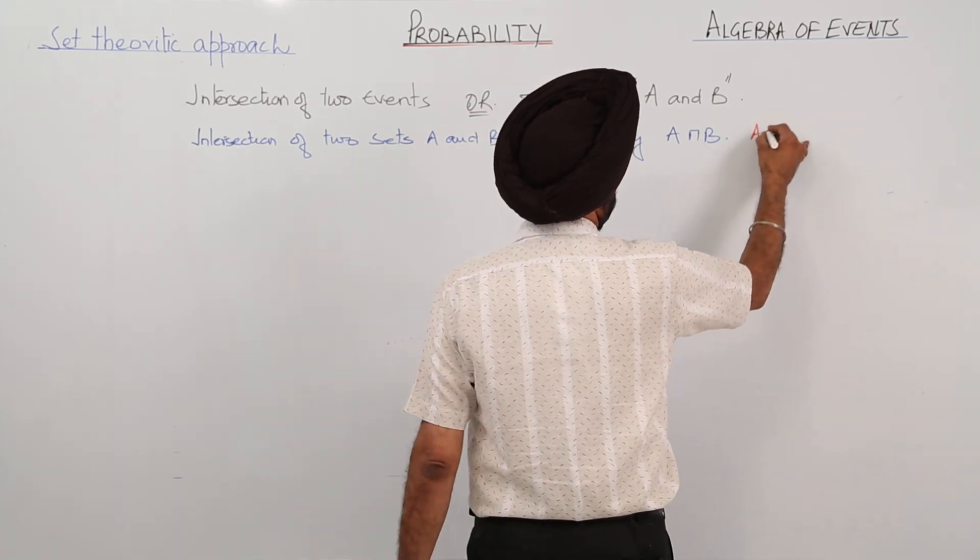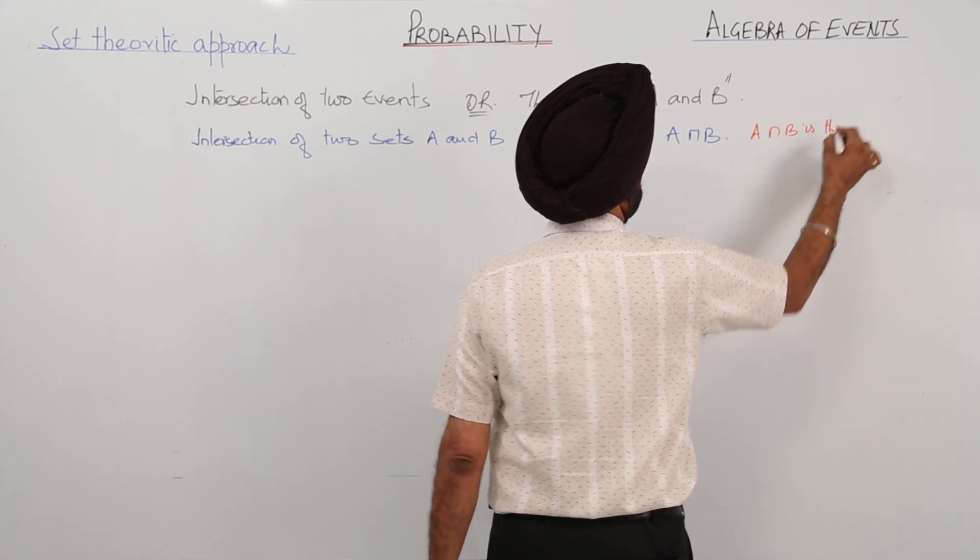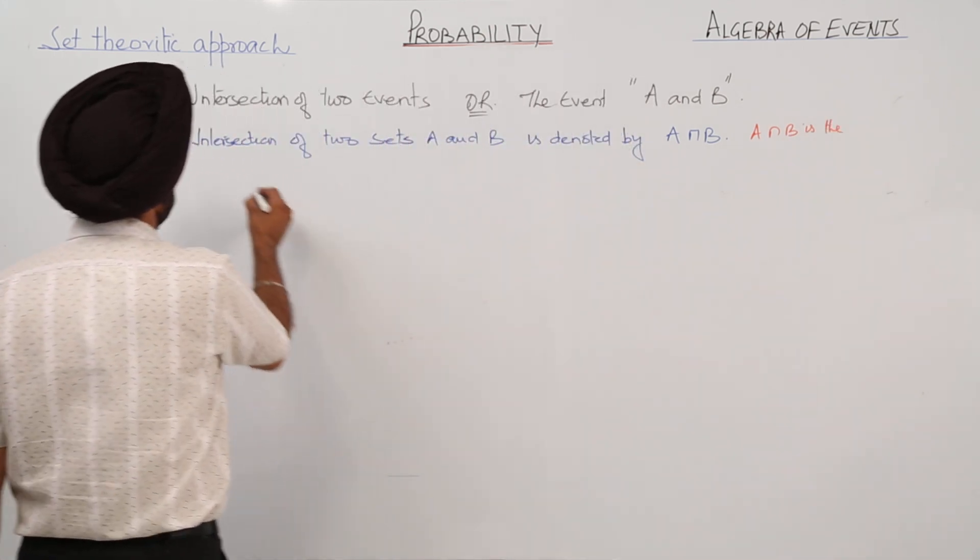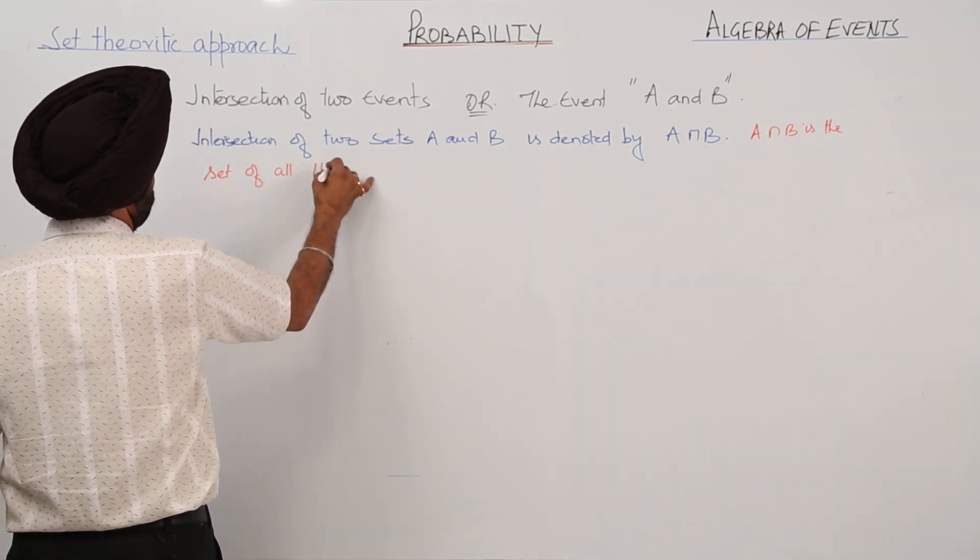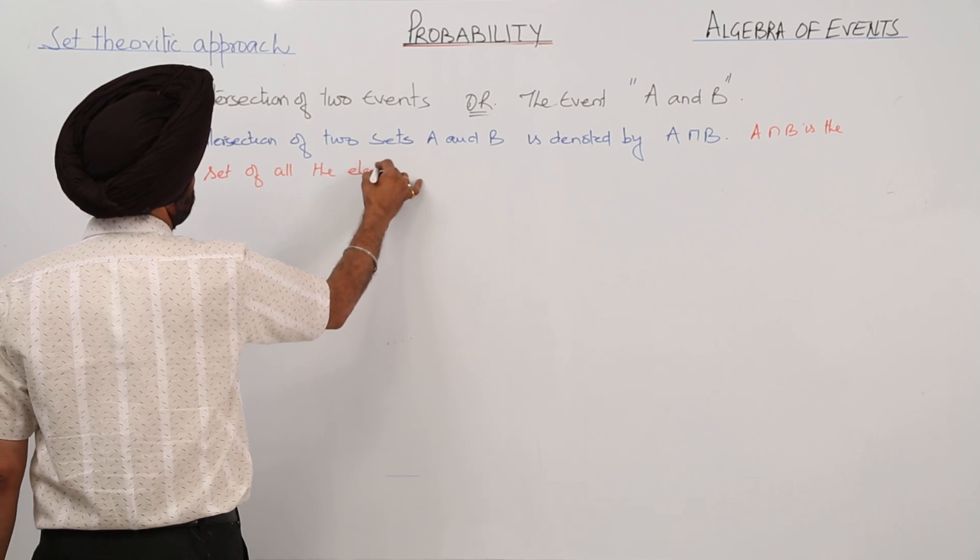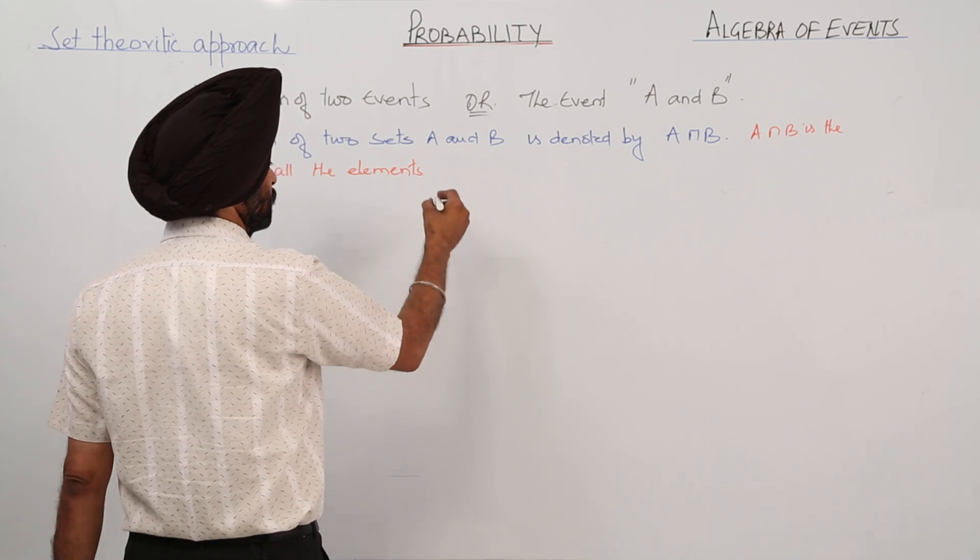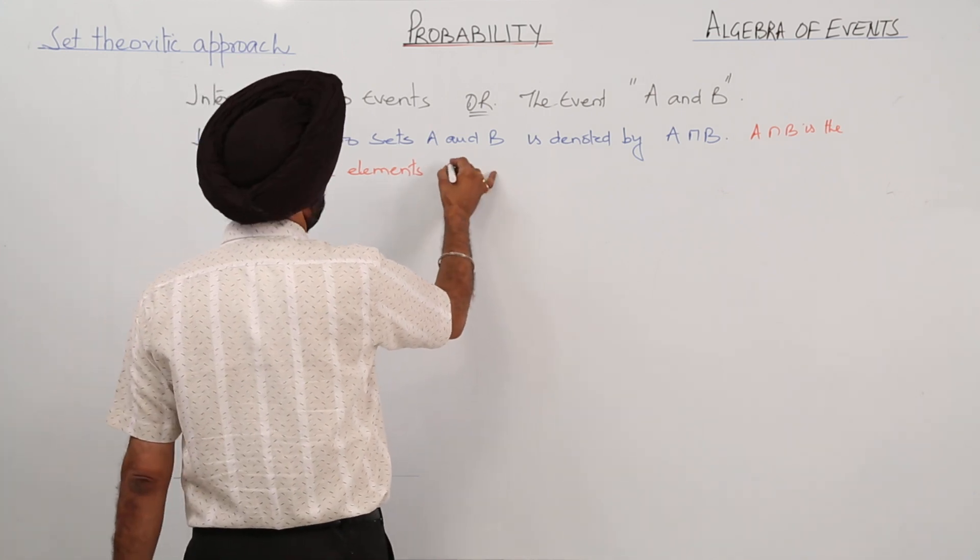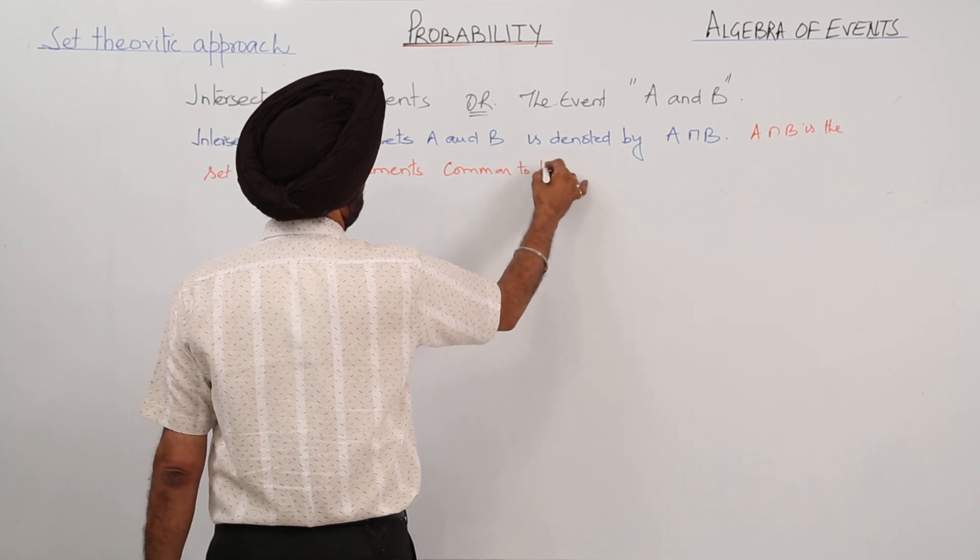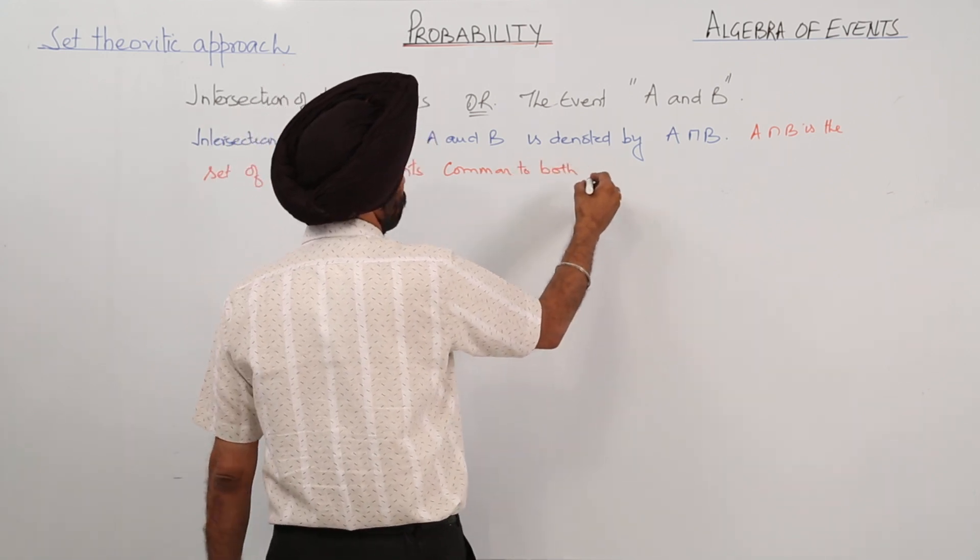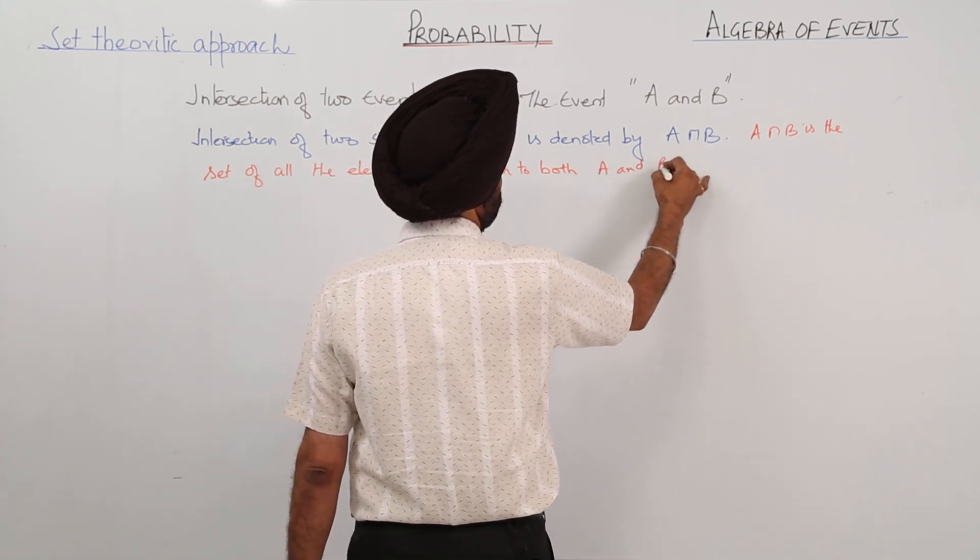A intersection B is the set of all the elements common to both A and B.